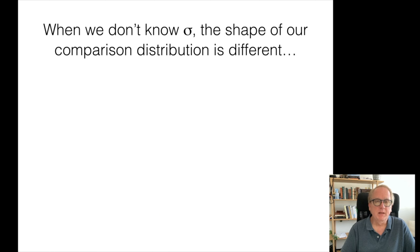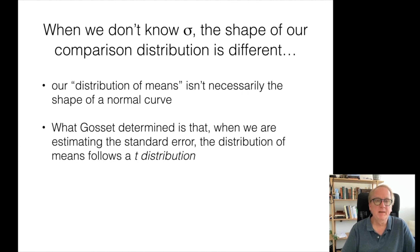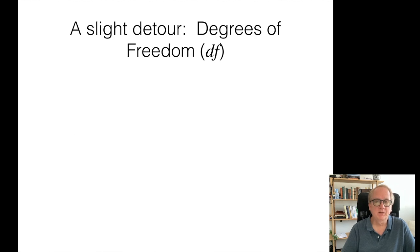Now keep in mind that my second and third points are that the shape of this comparison distribution is different — it doesn't necessarily follow a normal curve. What Gossett found was that the distribution of means when you're estimating the population standard deviation isn't necessarily the shape of a normal curve; it's a little bit off. What he determined was that when we are estimating it, the distribution of means follows what he called a t-distribution. Its exact shape depends on the degrees of freedom that are used to make the standard error estimate. In this case, degrees of freedom equals n minus 1.